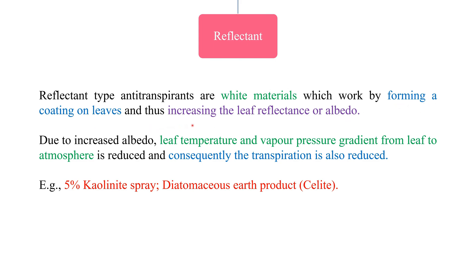Reflectant type antitranspirants are white materials which work by forming a coating on leaves, thus increasing the leaf reflectance or albedo. Due to increased albedo, leaf temperature and the vapor pressure gradient from leaf to atmosphere is reduced, and consequently transpiration is also reduced.